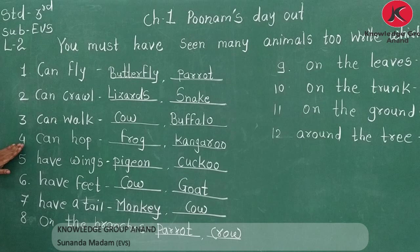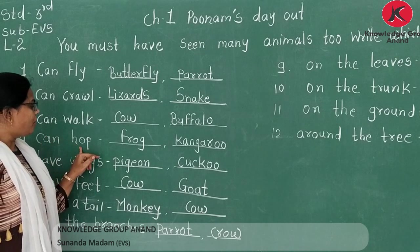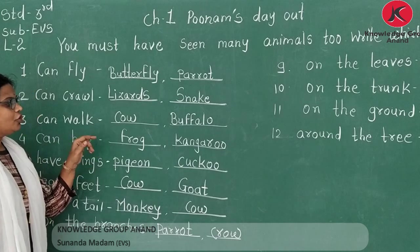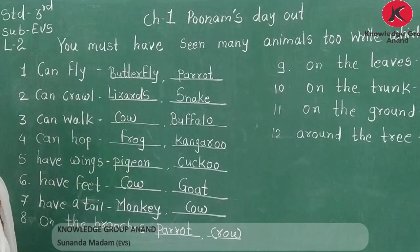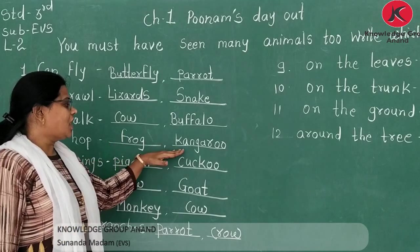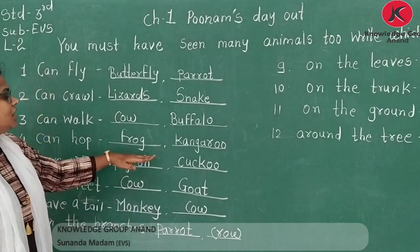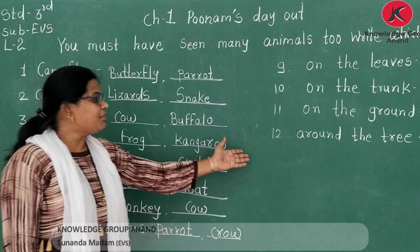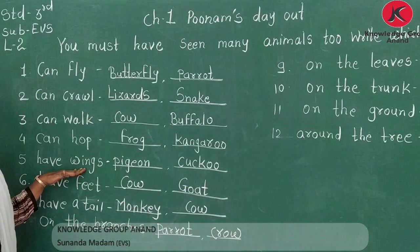Fourth number is 'can hop.' Hop means jo jump karte hain — those animals include frog. A dog is also mentioned here. You can also write other animals like a mongoose that you know.